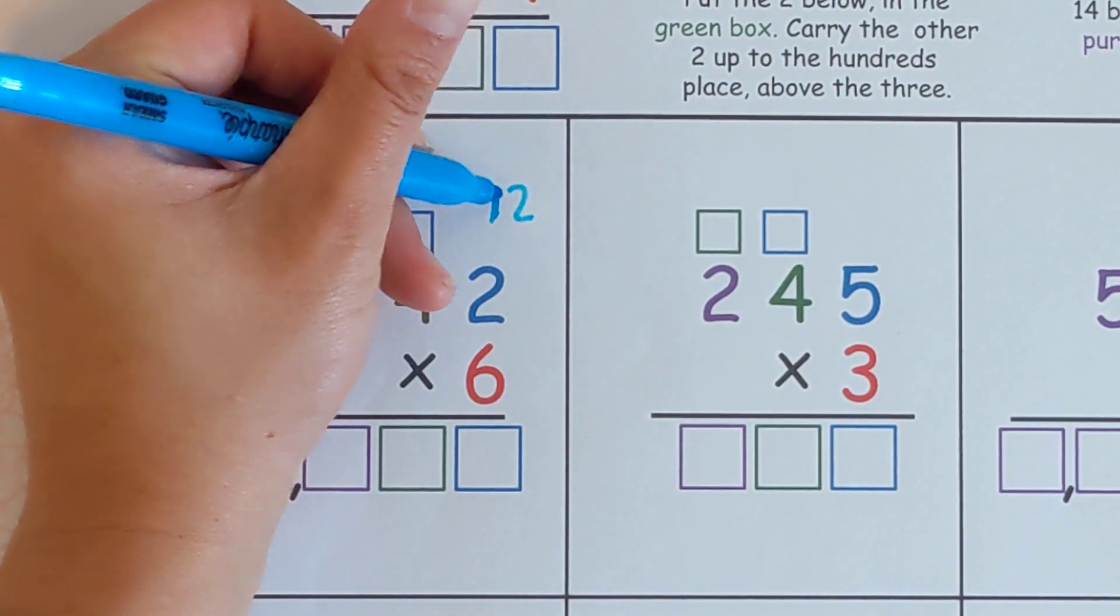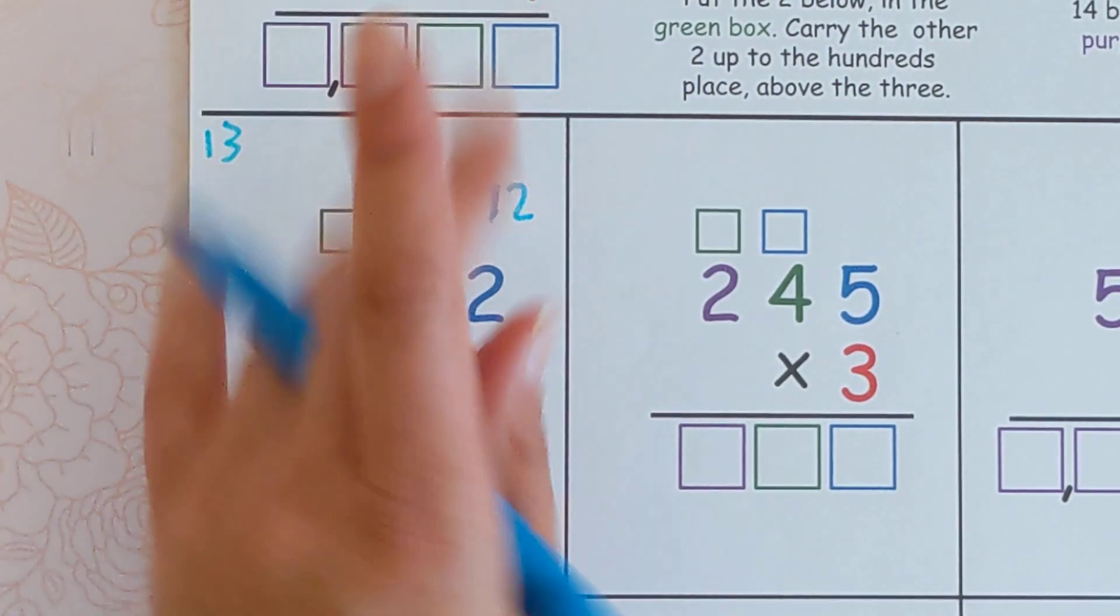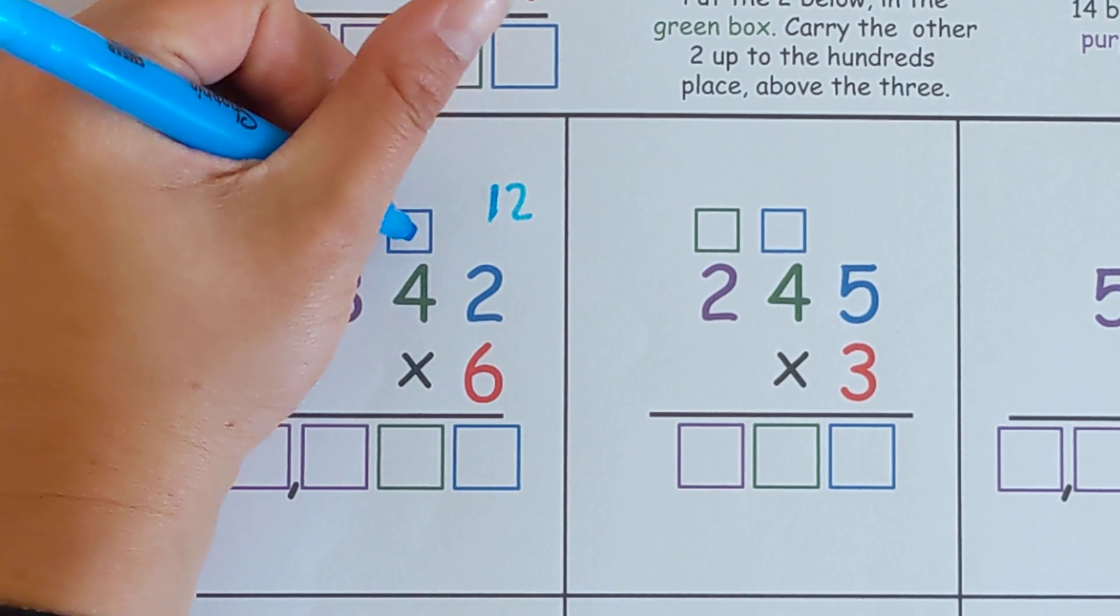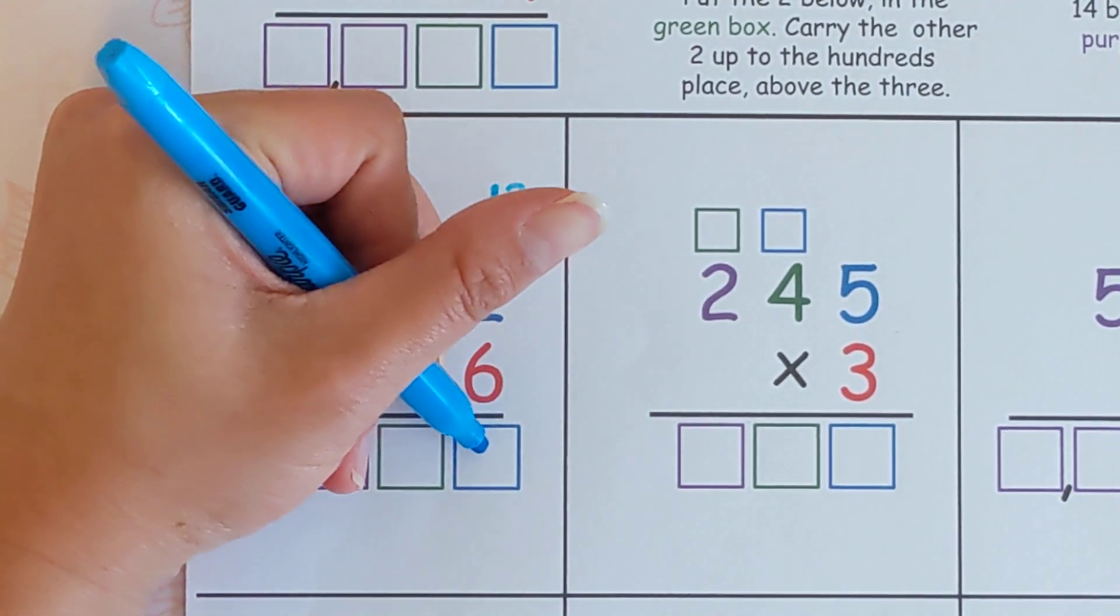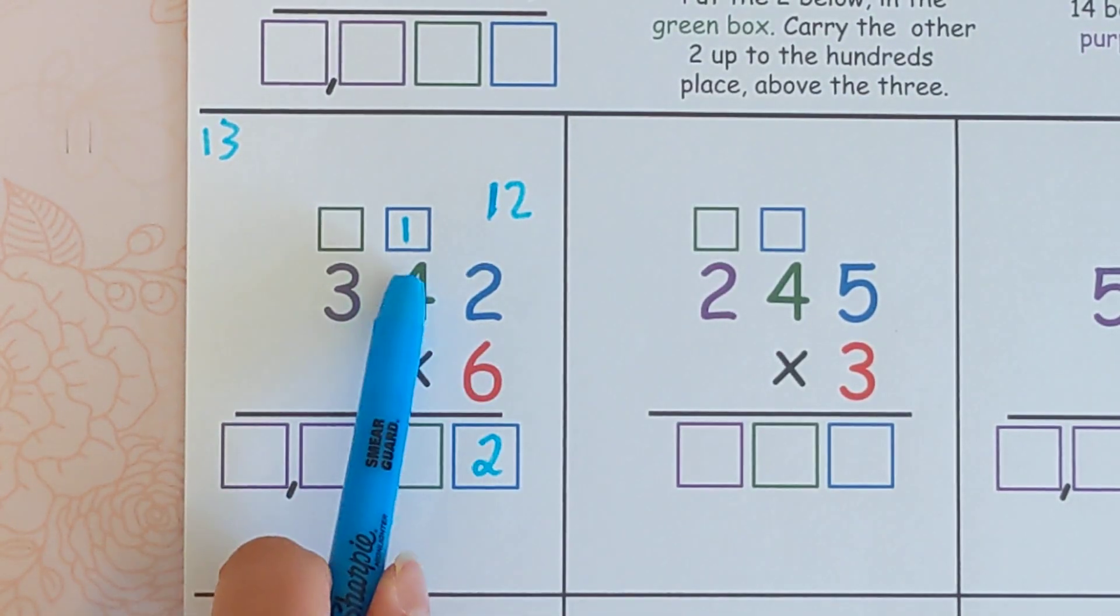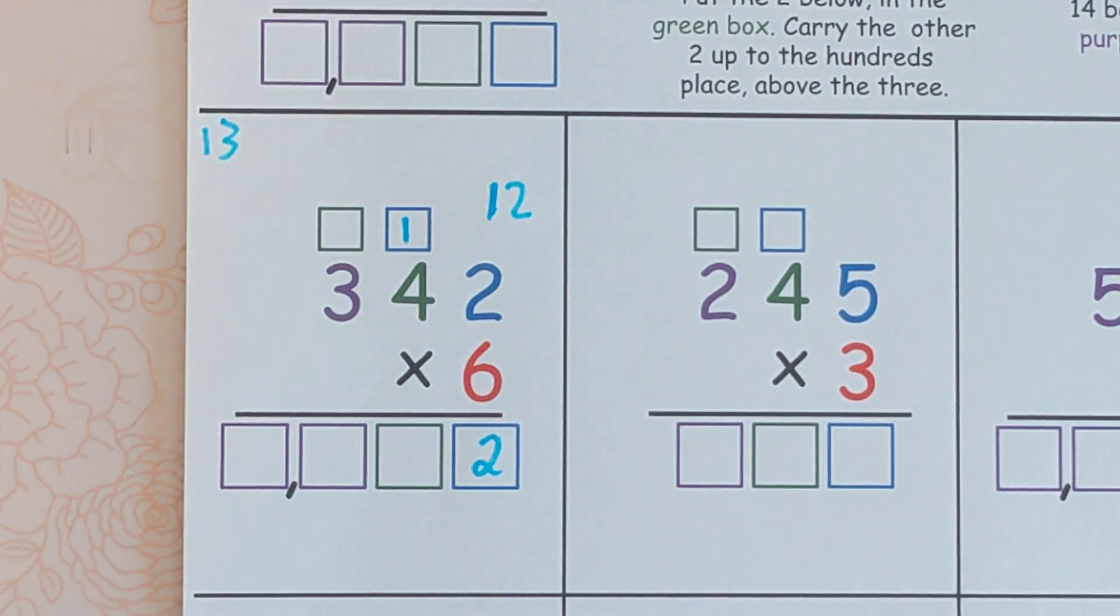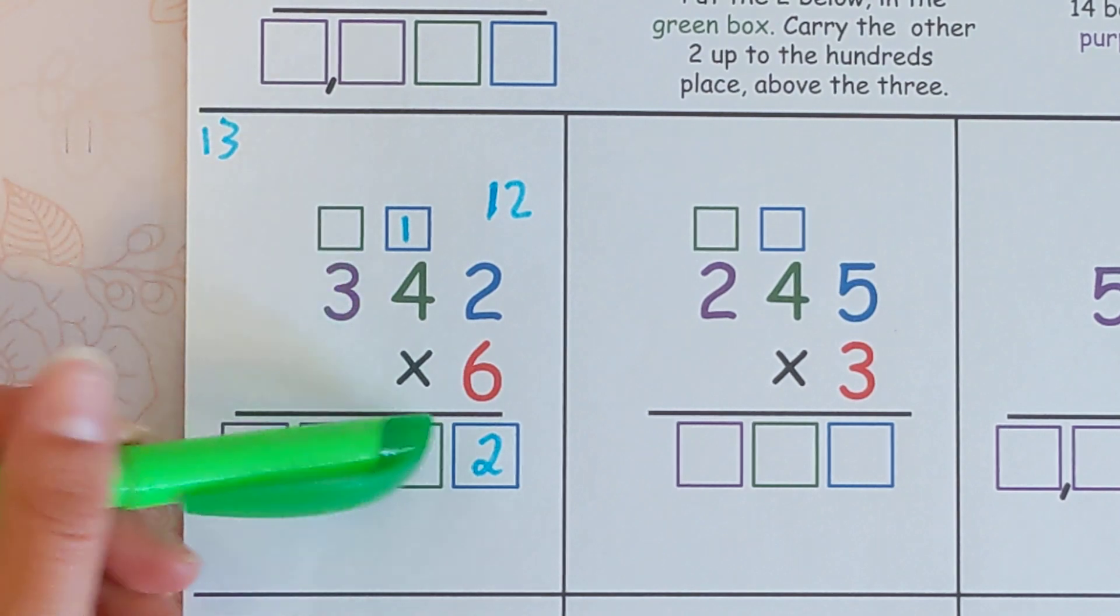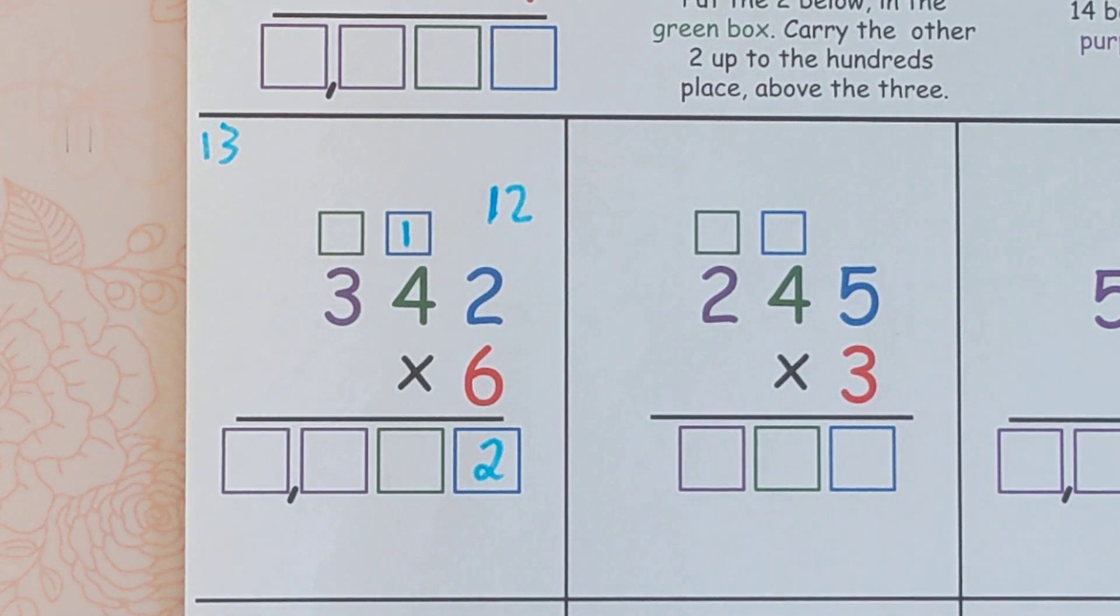So the one is on the left hand side. It's in the tens place. It's worth more. It's going to go up there. The two is in the ones place, and it goes down here. And now we're going to do six times four. So I'm going to switch to green here, and you can see we've got our green boxes for it too, to help remind us and guide us.